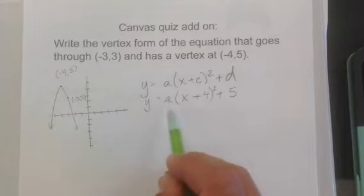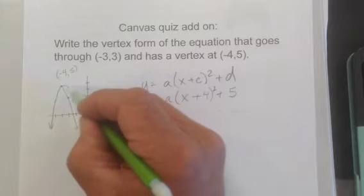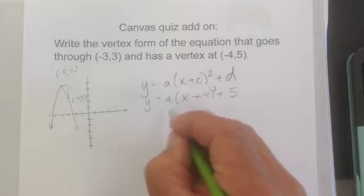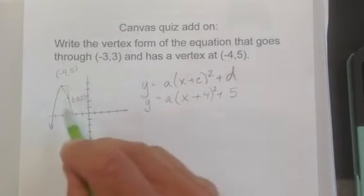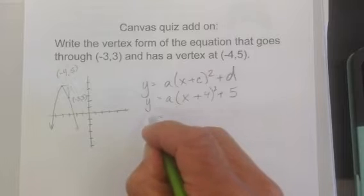Now the really only term I need is this a value. Just looking at the graph, I would expect it over 1, down 2, so it's 1 by 2. So I would expect that a value to be 2 and probably negative 2, but I'm gonna do some algebra just to make sure my concept is right.